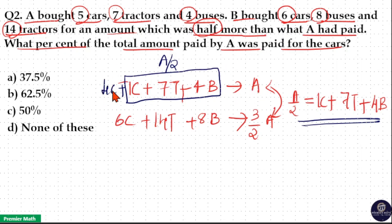4 cars cost A by 2 amount. If 4 cars cost A by 2 rupees, then 1 car costs A by 8 rupees, and 5 cars cost 5A by 8 rupees.